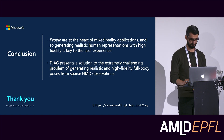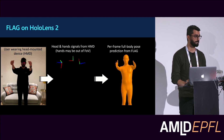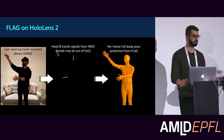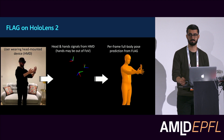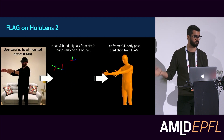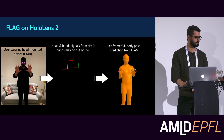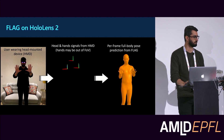Another question concerned temporal jitter visible in the hand pose in the demo video. The presenter explained that this is because the model performs per-frame prediction with no temporal information. Adding temporal smoothness as post-processing, or incorporating recurrent neural networks to model temporal information, is a natural extension on the roadmap.